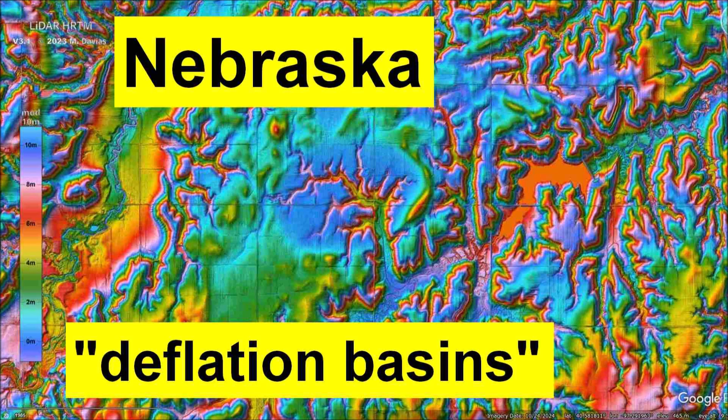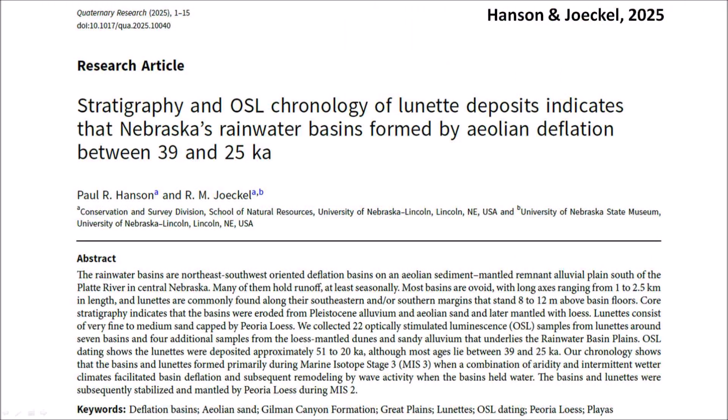Welcome to a presentation about American geology. This presentation discusses a new paper about the Nebraska Rainwater Basins. The Nebraska basins are similar to the Carolina Bays, but they have a southwest orientation instead of the southeast orientation of the basins on the east coast. The paper by Hanson and Jockel is titled Stratigraphy and OSL Chronology of Lunette Deposits, and indicates that Nebraska's rainwater basins formed by aeolian deflation between 39 and 25 Ka — that is, 39 to 25,000 years ago.